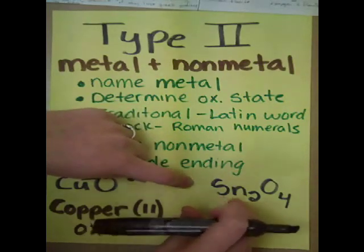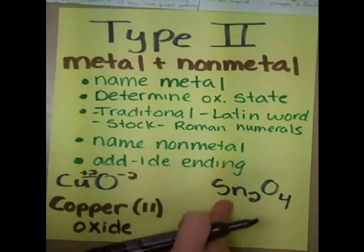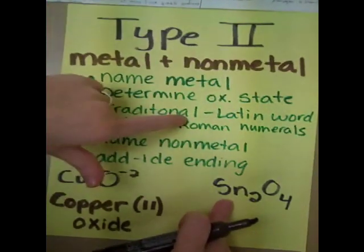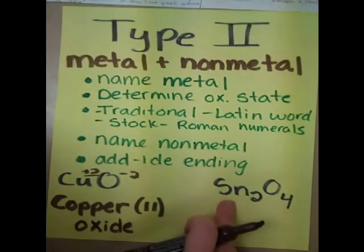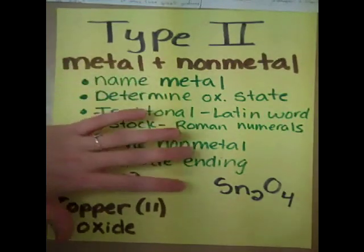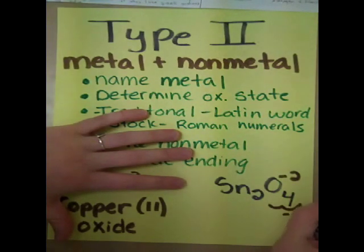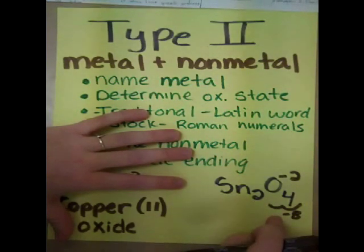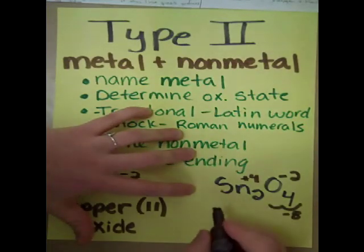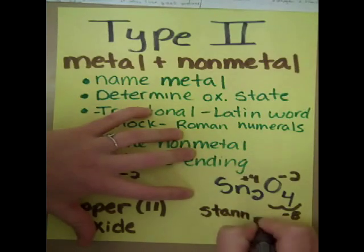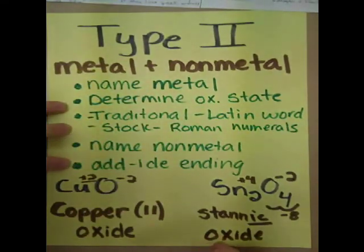Over here we also have a metal and a non-metal, and tin has varying oxidation states, so we use type 2. Using the traditional system, we use Latin words and add the -IC ending for a higher oxidation state, or -OUS for a lower oxidation state. Oxygen has a negative 2, giving a total of negative 8, so tin must be plus 8 divided by 2, which is plus 4 — a higher oxidation state. So we get stann-IC, then oxide.